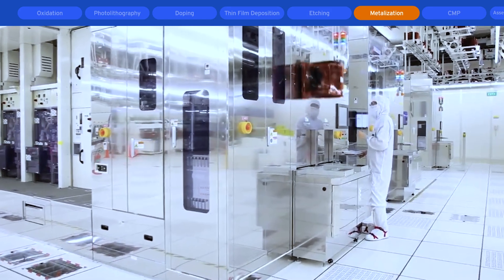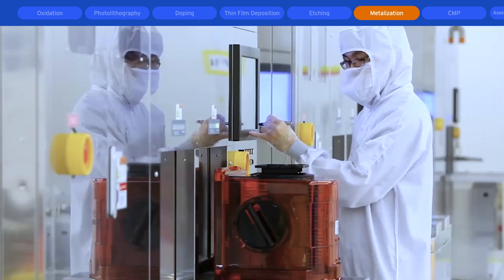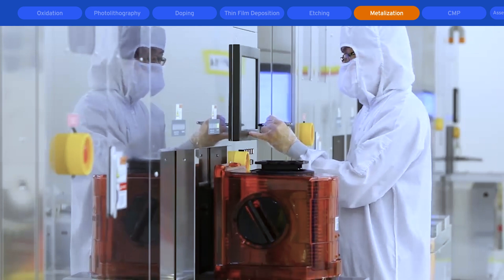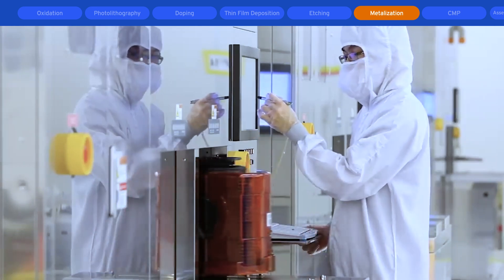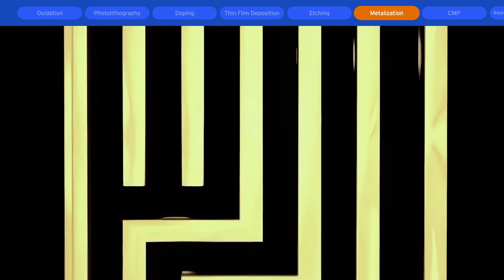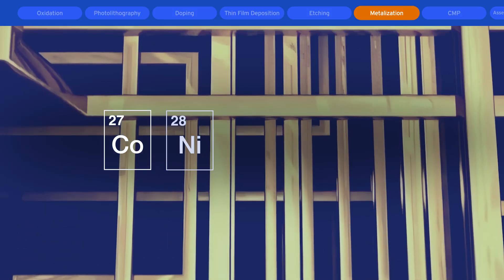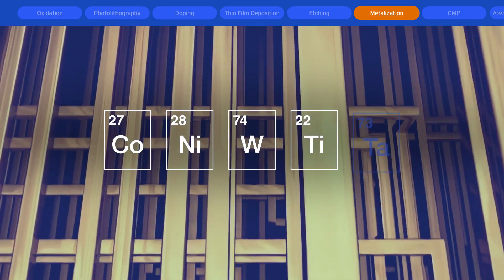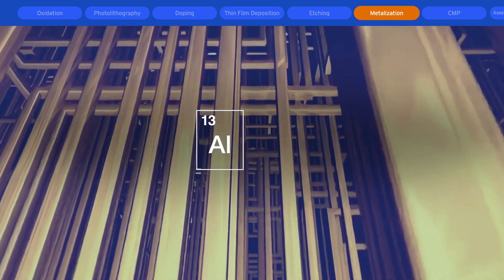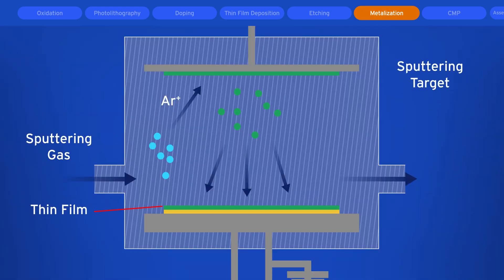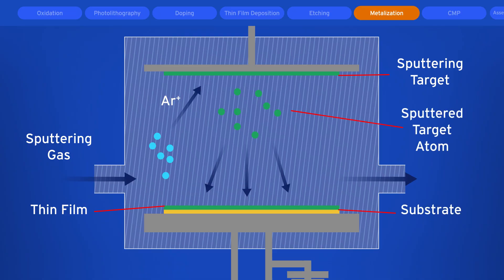Prior processing steps prepare the device for metallization, which creates electrical interconnections between all the transistors on the wafer. A variety of techniques is used to deposit metals, including barrier layers of cobalt, nickel, tungsten, titanium, or tantalum, followed by aluminum or copper interconnects.